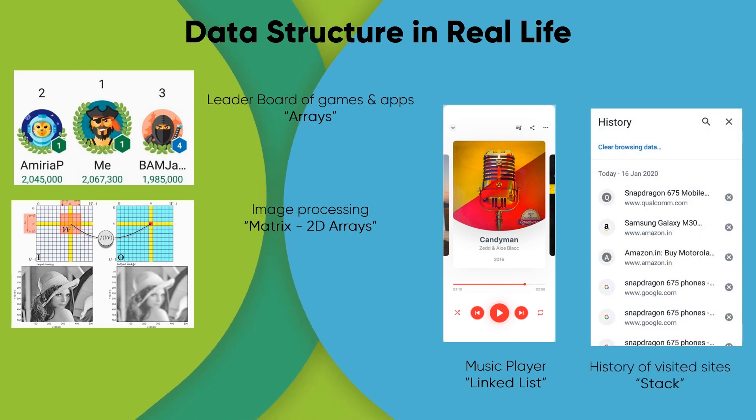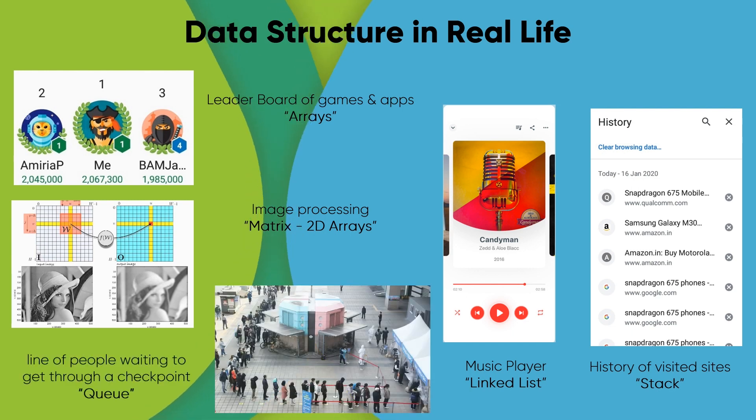The history of visited sites are displayed using the stack data structure. Also the line of people waiting to get through a checkpoint is using the queue. This is the queue data structure. These are quick examples of data structures in real life.